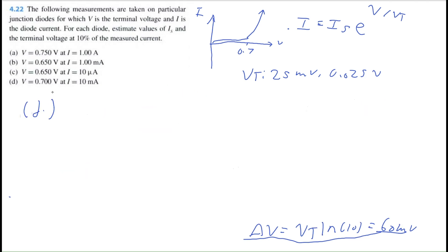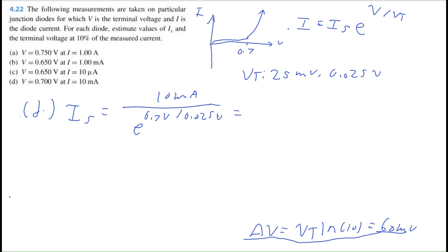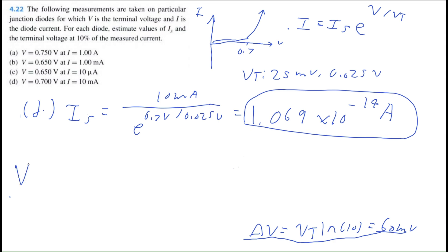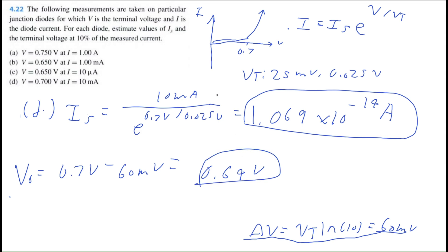Lastly, let's solve part D. V equals 0.7 volts and I equals 10 milliamps. IS equals 10 milliamps divided by e to the power of 0.7 volts divided by 0.025 volts, which equals 1.069 times 10 to the negative 14 amps. The new voltage is 0.7 volts minus 60 millivolts, equal to 0.64 volts. It's a little repetitive, but hopefully you understood this problem.